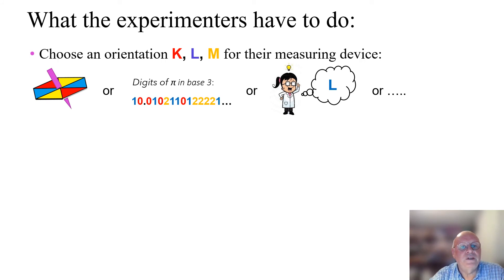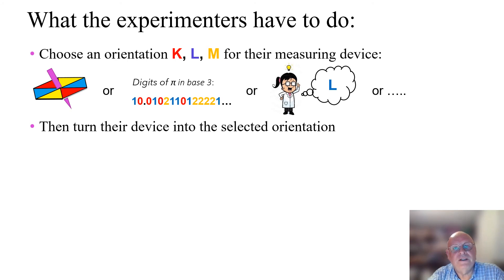Or they could just choose a direction at whim. Or they could select some genuinely random method such as radioactive decay to give their figure.